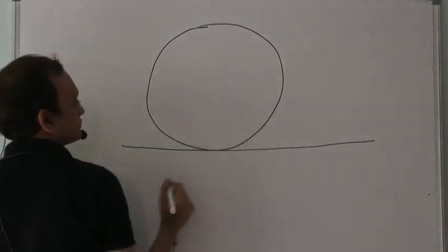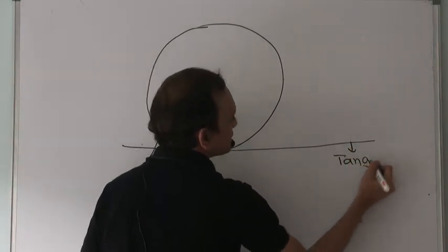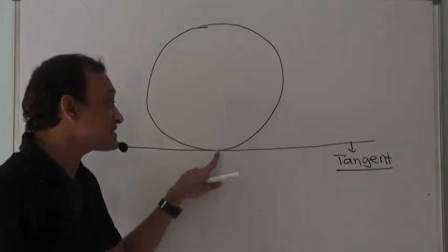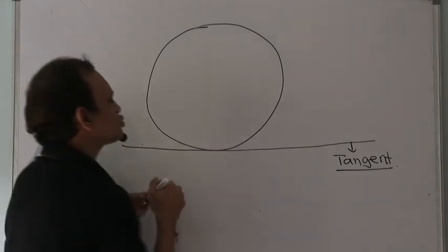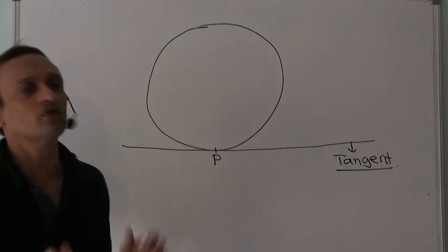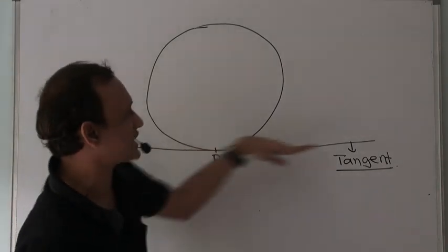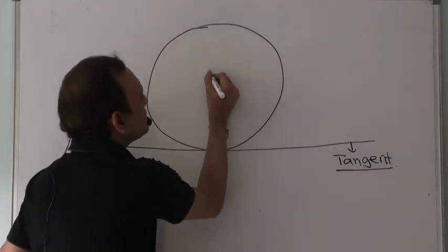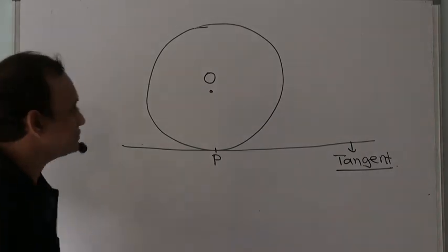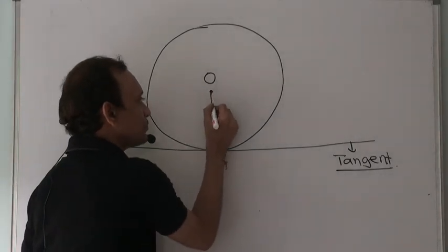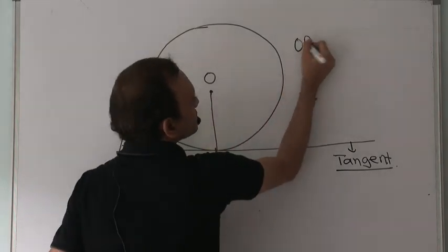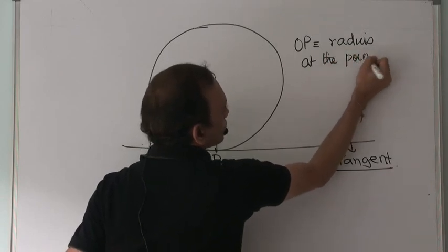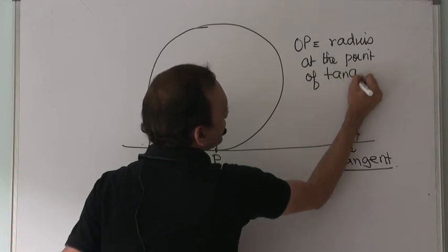If this is a tangent to the circle — a line that intersects the circle at two coincident points; mathematically two coincident points but physically just one point — say this tangent intersects the circle at point P. If O is the center of the circle, then OP will be the radius at the point of tangency.